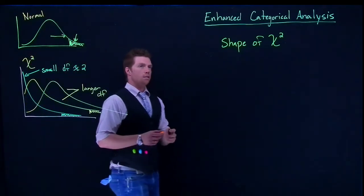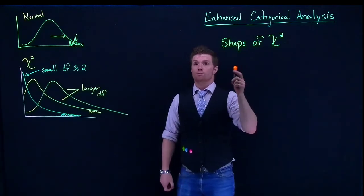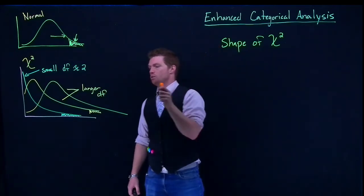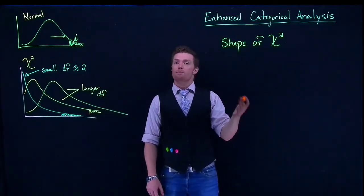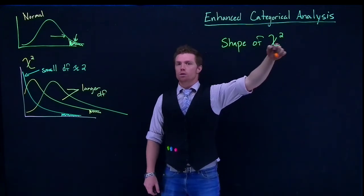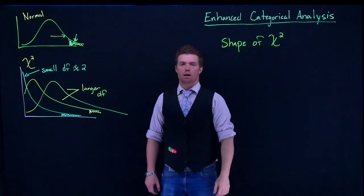As we're doing our enhanced categorical analysis, we will be using chi-squared as our test statistic to help us determine what our p-values are. And in reporting in our APA format, we will be using chi-squared to report our test statistic.